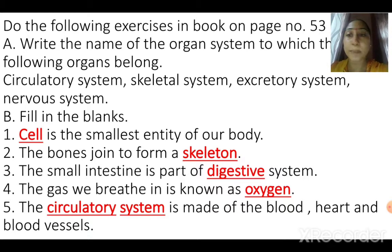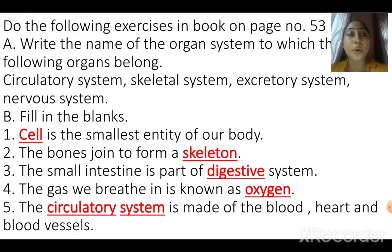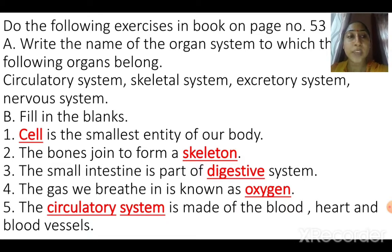The fourth one is the picture of a brain. Brain is a part of the nervous system. It controls all our organ systems of the body and it controls our sense organs, so it is a part of the nervous system.